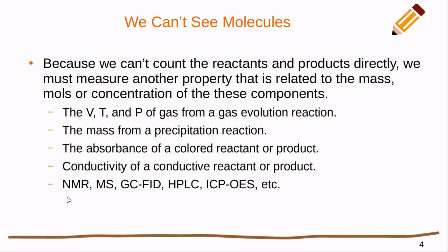Some of them are even more generalized. We've got NMR, nuclear magnetic resonance. We've got mass spectrometry. We've got gas chromatography paired with flame ionization detection, high performance liquid chromatography, inductively coupled plasma with optical emission spectroscopy. There's a whole host of tools that are used to determine the quantities of different chemicals. Some are better than others at this task, depending on exactly what kind of sample you have.